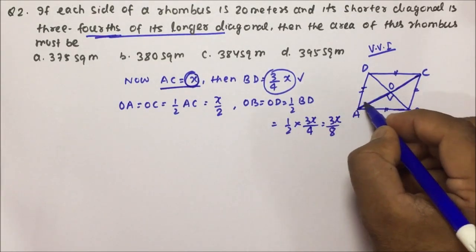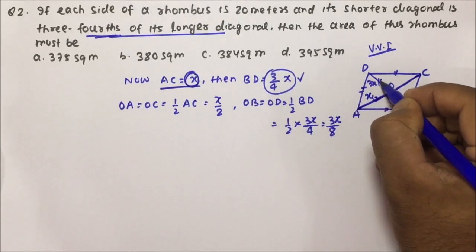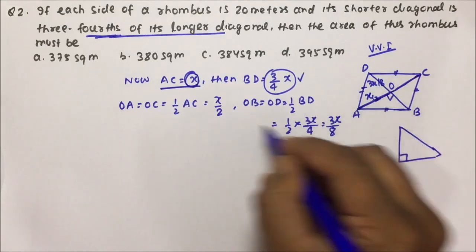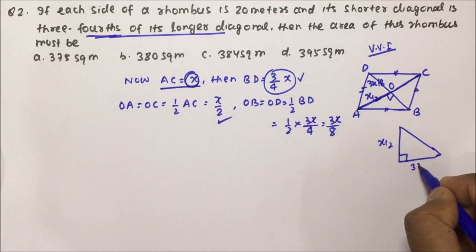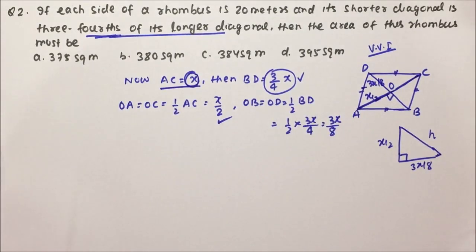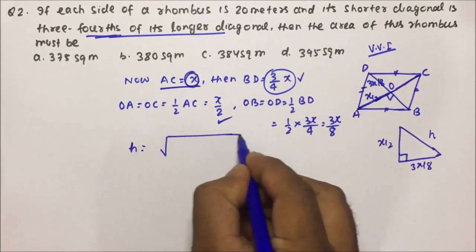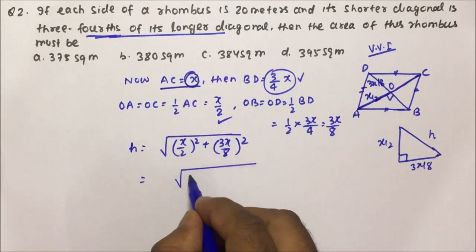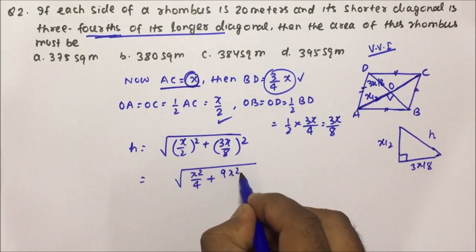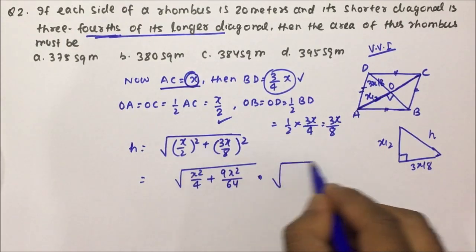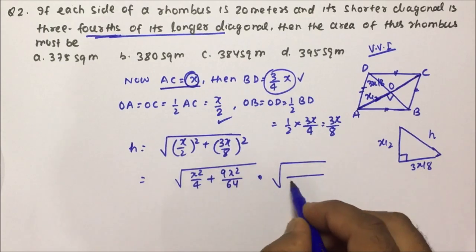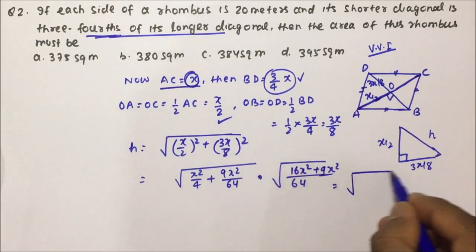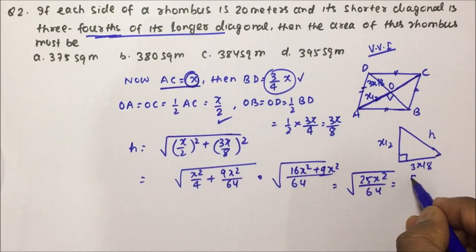We have a right triangle with legs X/2 and 3X/8, and the hypotenuse is the side of the rhombus. Hypotenuse = √((X/2)² + (3X/8)²) = √(X²/4 + 9X²/64). Taking LCM of 64: = √((16X² + 9X²)/64) = √(25X²/64) = 5X/8.